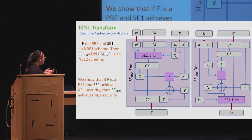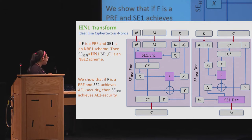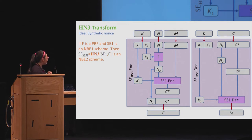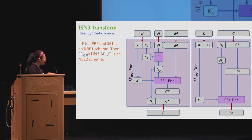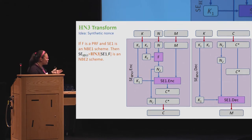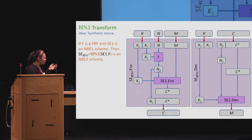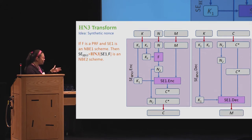We show in our paper that if F is a PRF and SE1 achieves AE1 security, the scheme as a whole achieves AE2 security. We also present another transform that uses a synthetic nonce: you encipher the nonce to get a nonce N2, and use that with encryption instead. This is a simpler construction, somewhat reminiscent of SIV, and more efficient because in decryption you don't need to retrieve the nonce anymore. You can see some trade-offs between computational overhead and security — this one is much more efficient, but the security bound is worse.